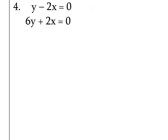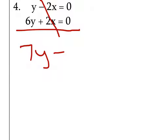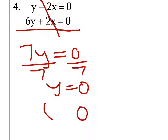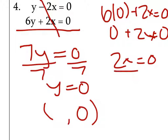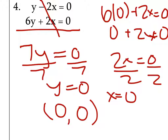Grant, we'll do number 4. So these cancel out, then it's 7Y equals 0. Divide Y by 7 — Y equals 0. And then 6 times 0 plus 2X equals 0, then 0 plus 2X equals 0, then 2X equals 0. Excellent work, Grant. You get a gold star.